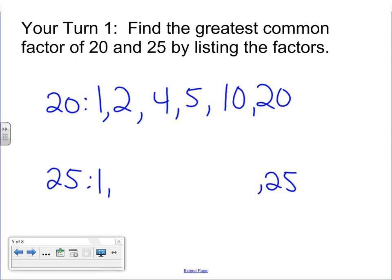2 doesn't work because it's even. 3 doesn't work because 5 plus 2 is 7. 4 doesn't work because if it's not divisible by 2, it's not going to be divisible by 4. 5 will work though because 5 times 5 is 25. 6 doesn't work. 7 doesn't. 8, 9, and so on. And you'll notice then that, boy, there's only a few factors for 25. What is the greatest common factor? What's the biggest number that those two lists share? That's 5. So that's one way to find the greatest common factor, and that's by listing out the factors.